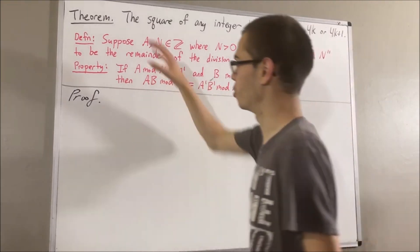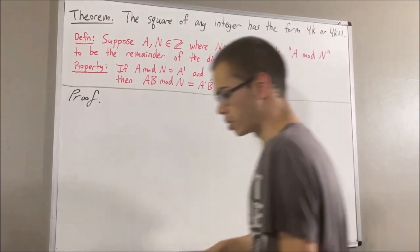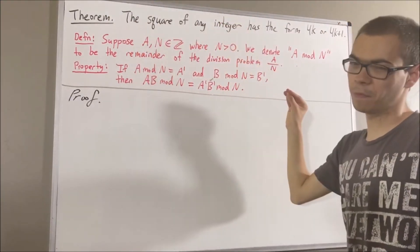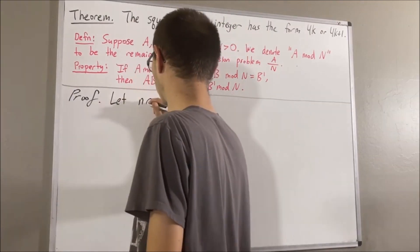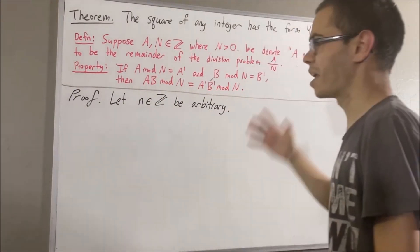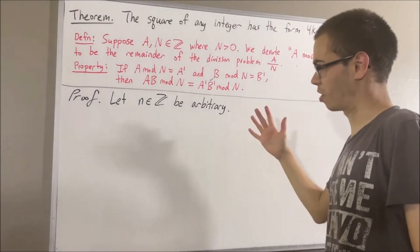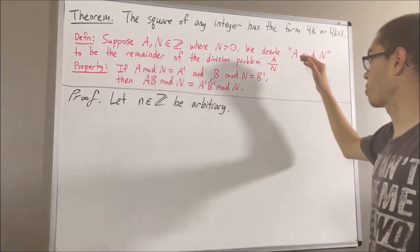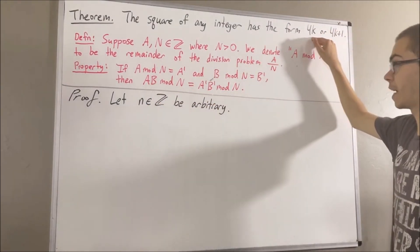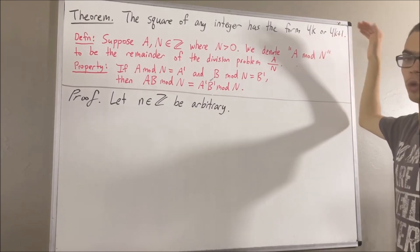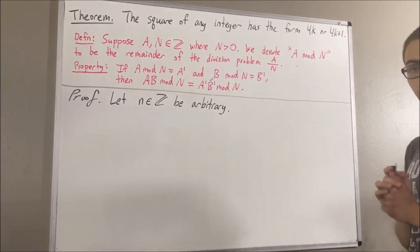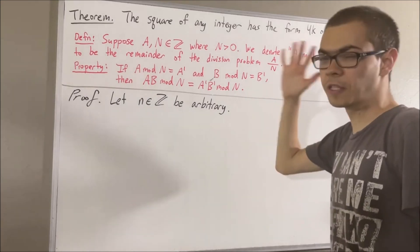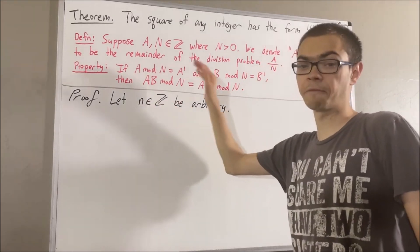Now let's get into proving this theorem. To start out the proof, let's give ourselves an arbitrary integer — I'll call it n. The whole goal from here is to show that n squared has either the form 4k or 4k plus 1, where k is an integer. To start, let's consider the division problem n divided by 4.